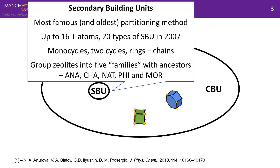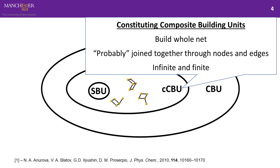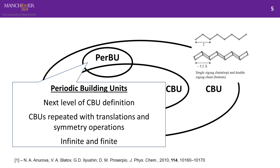Some of the most famous secondary building units are shown on screen — the double four ring, which is like a cube, and the double six ring, which is a hexagonal prism. The CCBUs — constituting composite building units — involve arbitrary choices when combining nodes and edges, and can be infinite or finite, so they don't lend themselves to being a general building tool. We need something with strict rules that can be algorithmized.